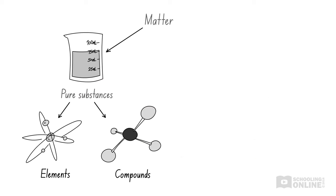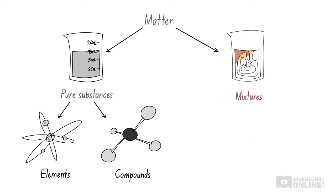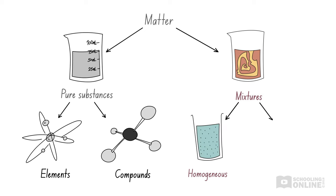However, it is important to understand that not all mixtures are alike. Some substances combine evenly in mixtures, but others do not. In this lesson, we will explore the two main types of mixtures: homogeneous mixtures and heterogeneous mixtures. We will also look at solutions, which are a special type of homogeneous mixture.